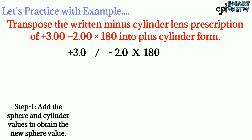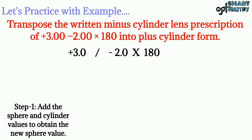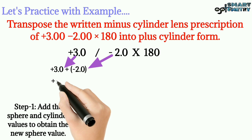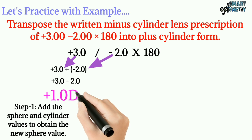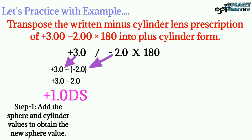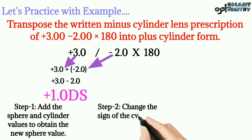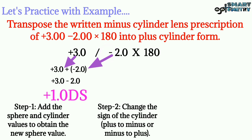Here our sphere value is plus three and cylinder value is minus two, so let's add these two values: plus three plus minus two, or plus three minus two, so our new sphere value is plus one. Now step two: change the sign of the cylinder. Here the sign of the cylinder is minus, so we have to write it as plus.